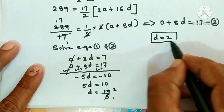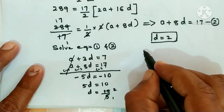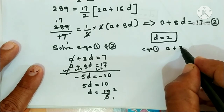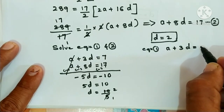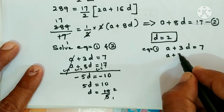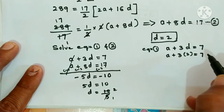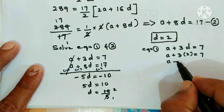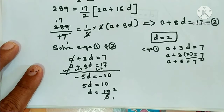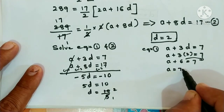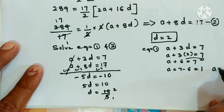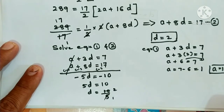Now take equation number 1: a plus 3d is equal to 7. Substituting d equals 2: a plus 3 into 2 is equal to 7. 3 twos are 6, so a plus 6 is equal to 7. Take 6 to the right hand side: a is equal to 7 minus 6, which is equal to 1. So a is equal to 1.